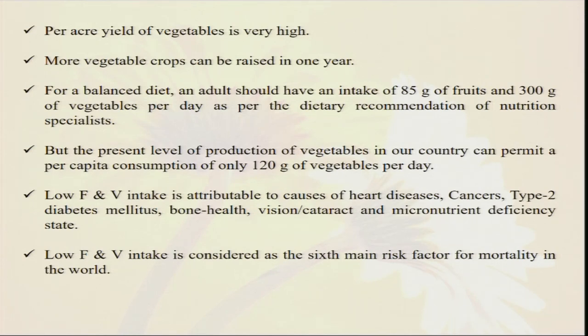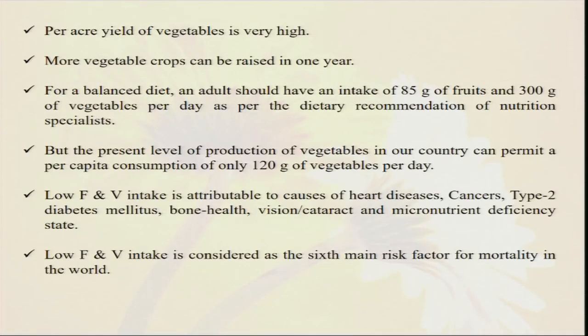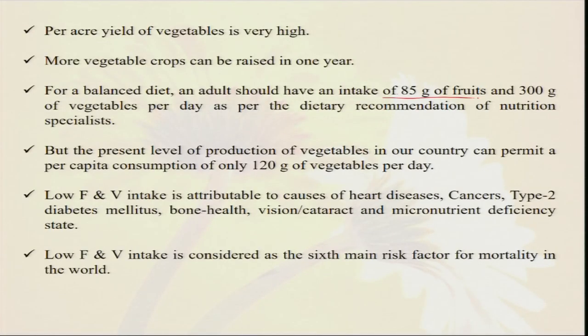Wherever we grow vegetables, their yield is very high. Within a small plant of just pumpkin we can harvest 10 to 20 pumpkins in our organic kitchen garden, sufficient to supply vegetables for one or two months. Their duration is very much less — most of these vegetables take 2 to 4 months, so 3 or 4 crops we can rotate in the same field in one year. People need about 85 kilograms of fruit and 300 grams of vegetables per day, and that can be achieved if you make a very good organic kitchen garden.